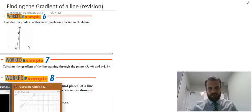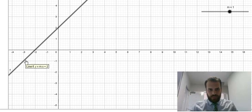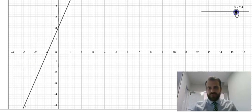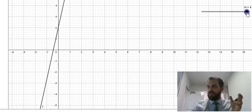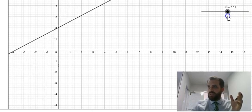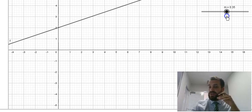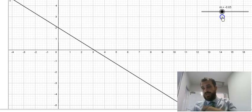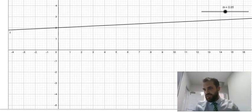Now, what do I mean by the gradient of a line? Here is my line on a Cartesian plane. The gradient is how steep that is. If I increase the gradient, it's steep. If I decrease the gradient, and then if the gradient is negative, it goes down the other way. So, you've seen it all before.